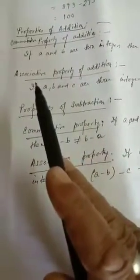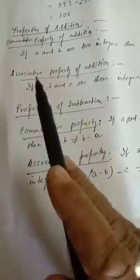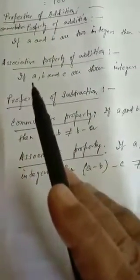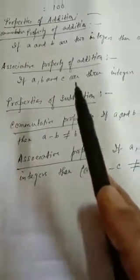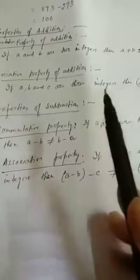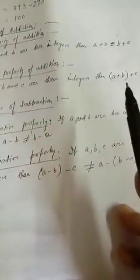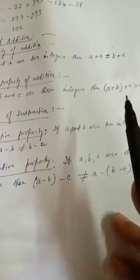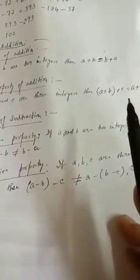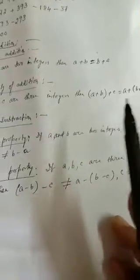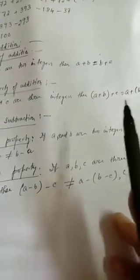The second property is known as the associative property of addition, which tells that if a, b, and c are three integers, then (a + b) + c is equal to a + (b + c). You can write it either way — both sides the sum will be equal.